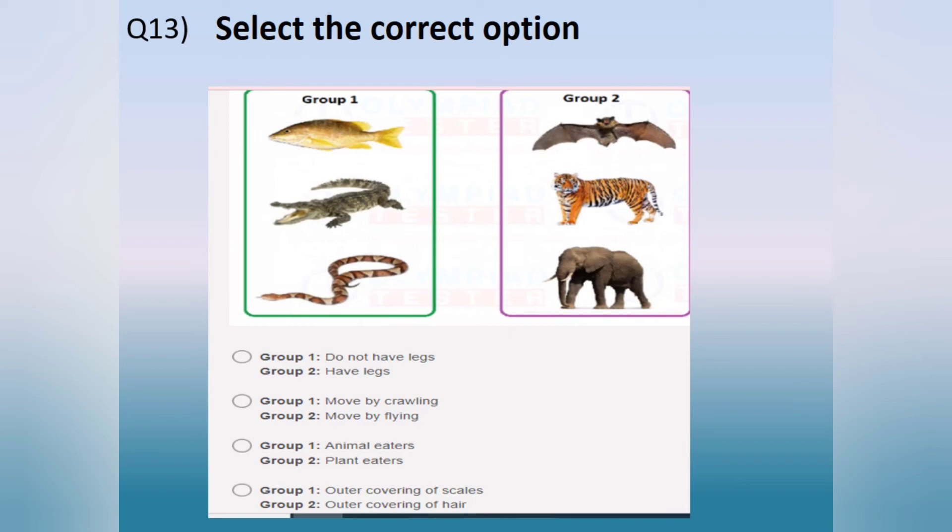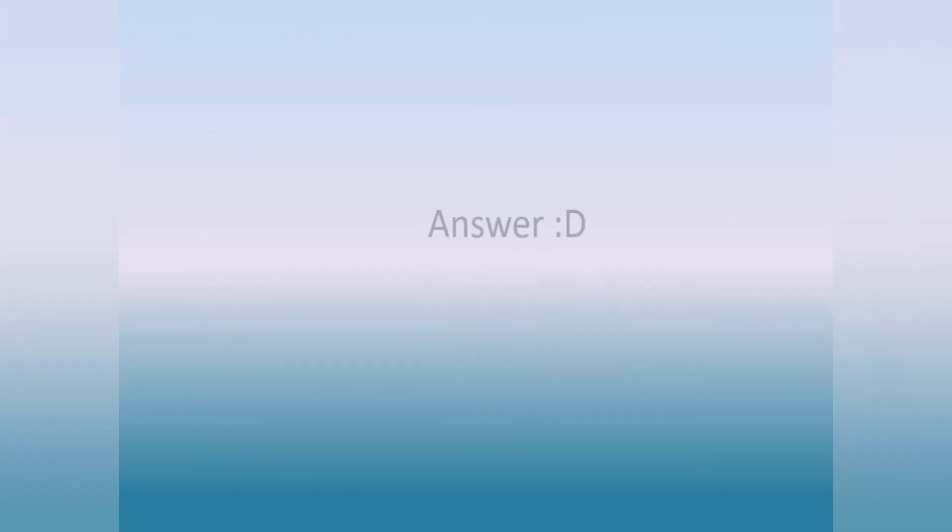Option C. Group 1 animal eaters. Group 2 plant eaters. Option D. Group 1 outer covering of scales. Group 2 outer covering of hair. The answer is option B.